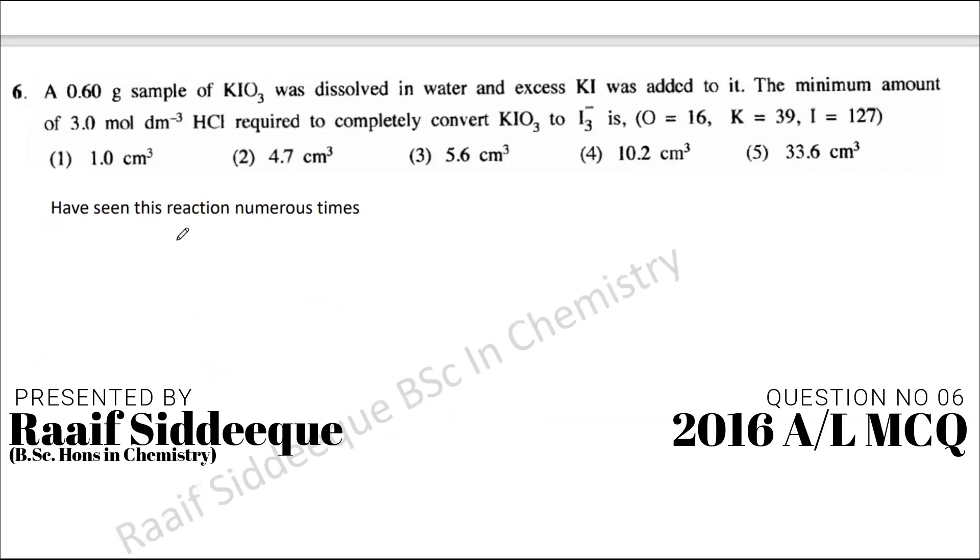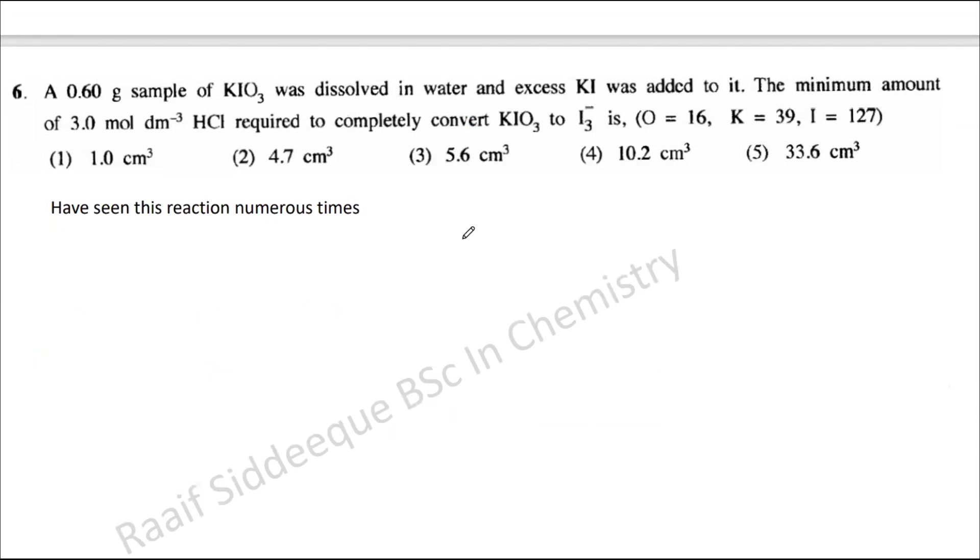Right, so moving on. We are in a position now where we have to use the board as well. So we have a 0.6 gram sample of KIO3 which was dissolved in water and excess KI was added. If you can remember we have discussed five papers, so think about the places where we have come across this reaction. The minimum amount of HCl required to completely convert KIO3 to I3-. So I3- means since they have added excess KI.